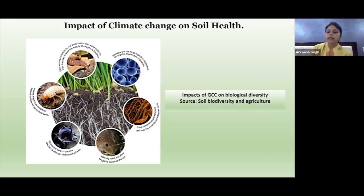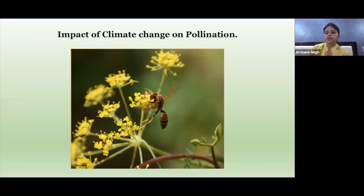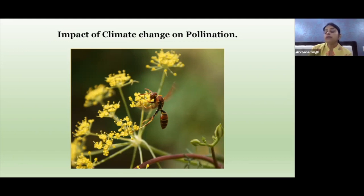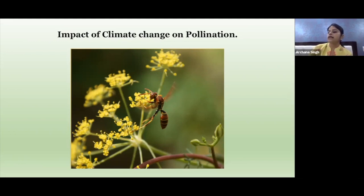One of the most important ecosystem services for sustainable crop production is the mutualistic interaction between plants and animals, that is pollination. There are very few studies on impacts of climate change on pollination, but some ideas on how they can be affected include further population declines, poleward expansion of pollinators, and disruption of pollination due to spatial-temporal mismatch of plant flowering and pollinator activity.